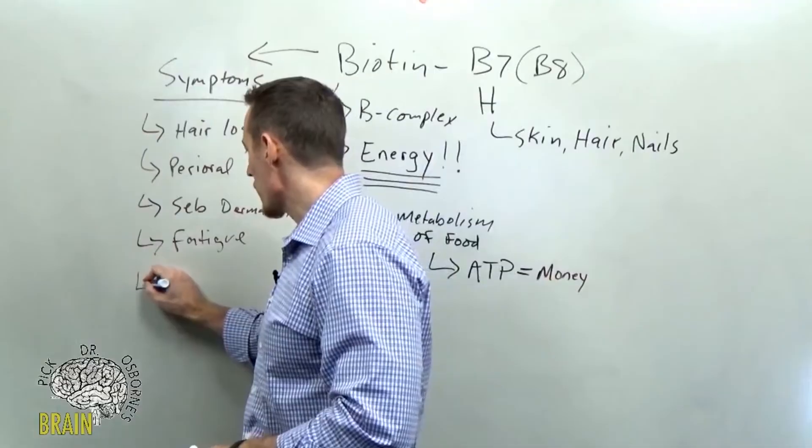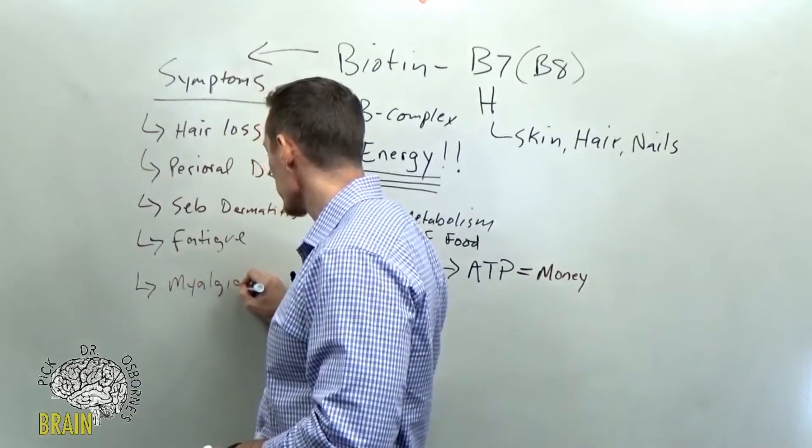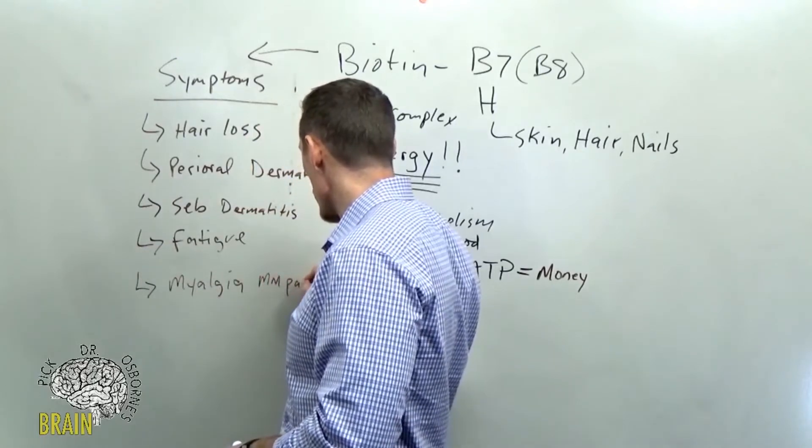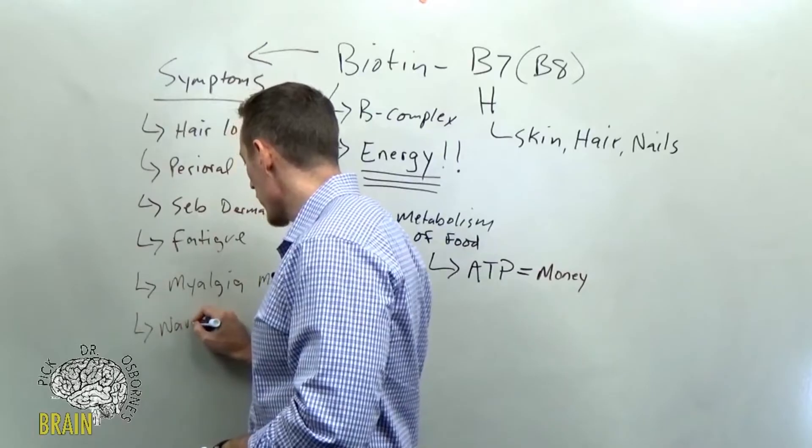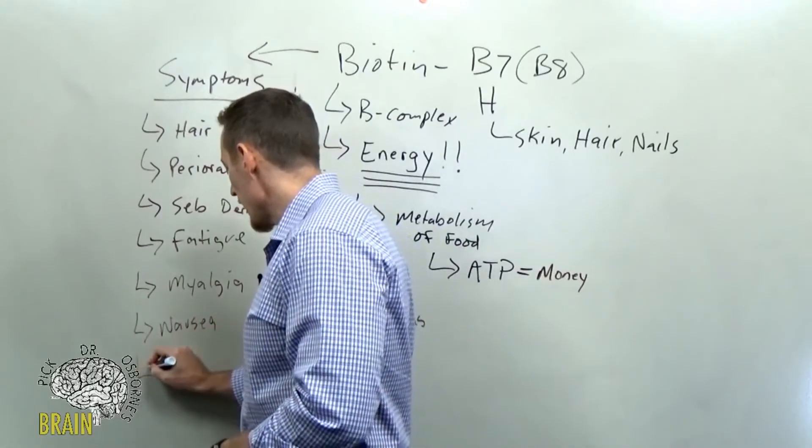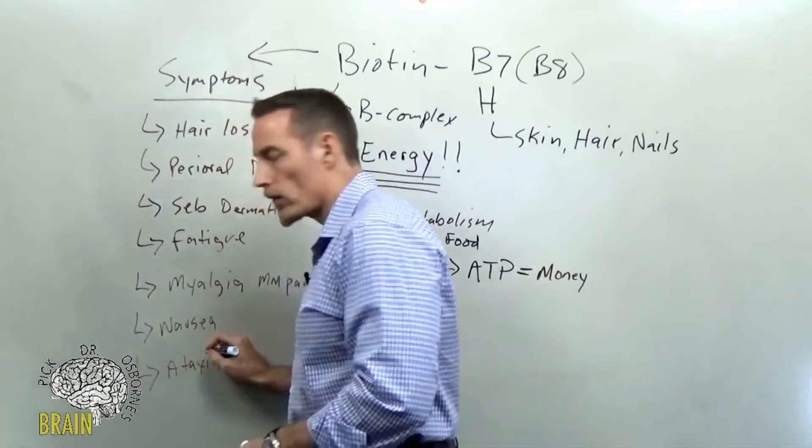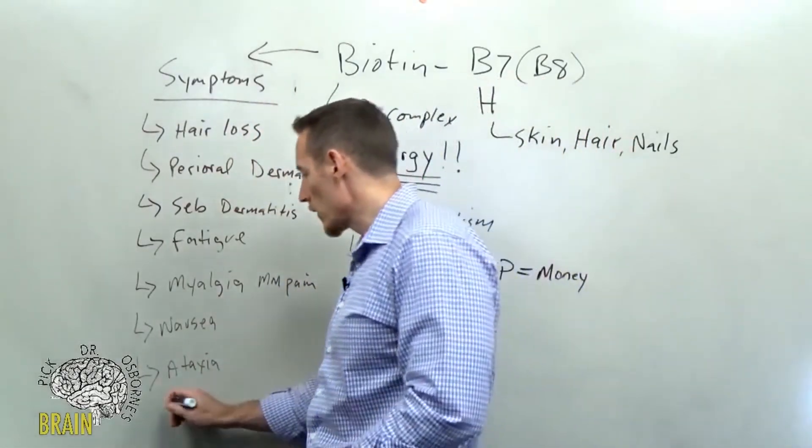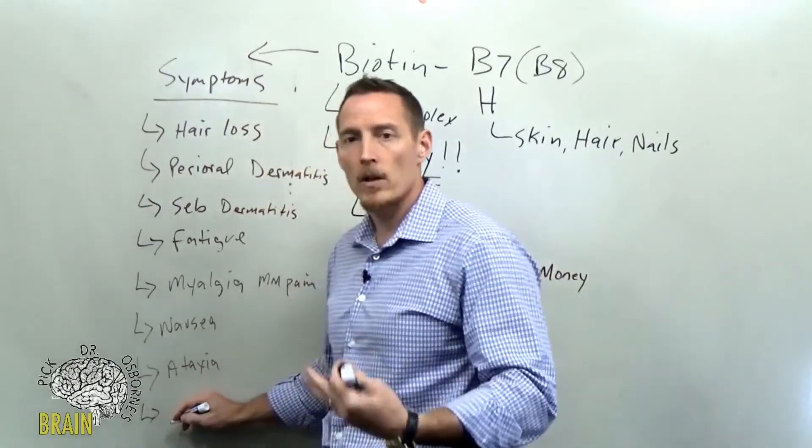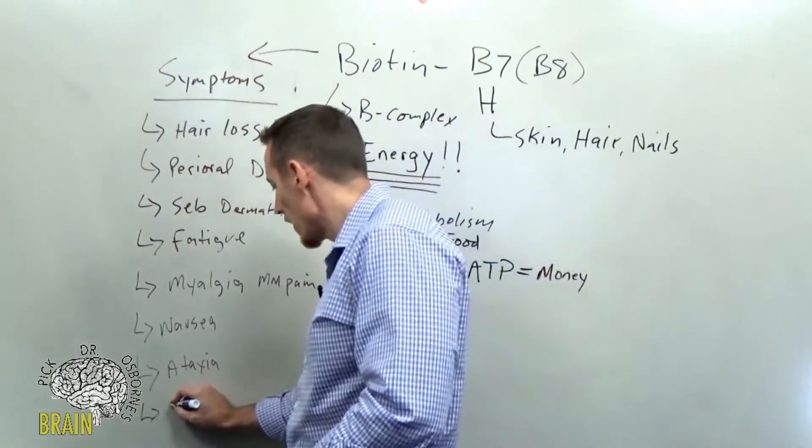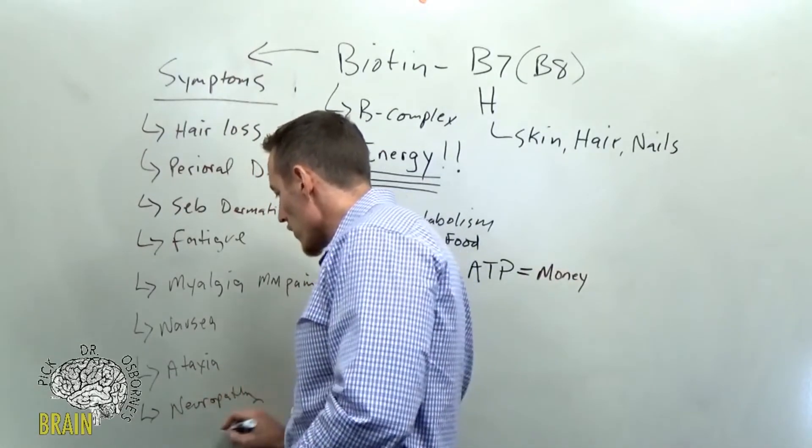Now, other symptoms associated with biotin deficiency, myalgia or muscle pain is one of them. Nausea can be a symptom of biotin deficiency, ataxia or imbalanced gait. So starting to when you walk feeling somewhat dizzy, this can happen as a result. There are other forms of neuropathy. So neuropathy, like pain neuropathies or numbness and tingling in the hands and the feet, but neuropathy is a common side effect of biotin deficiency.